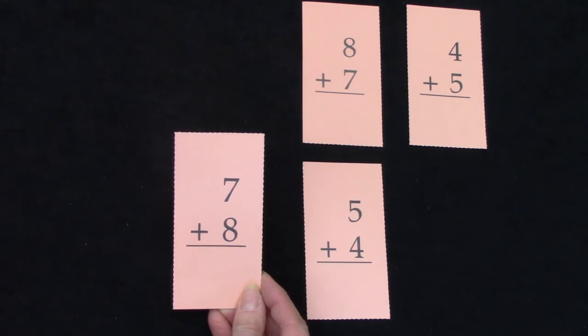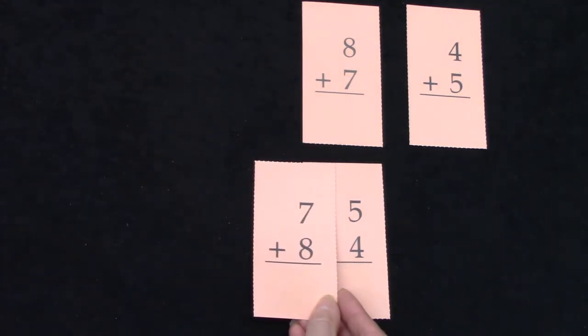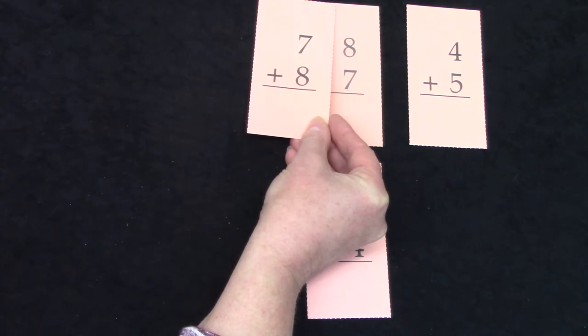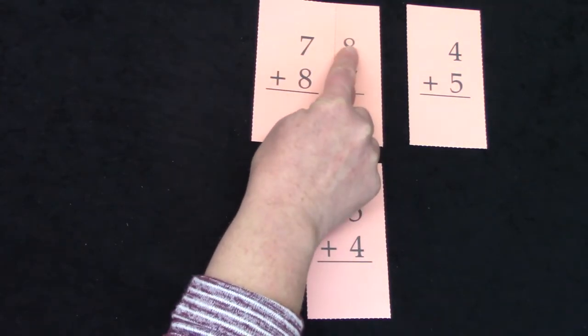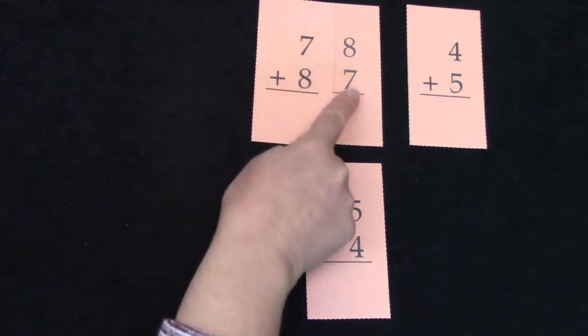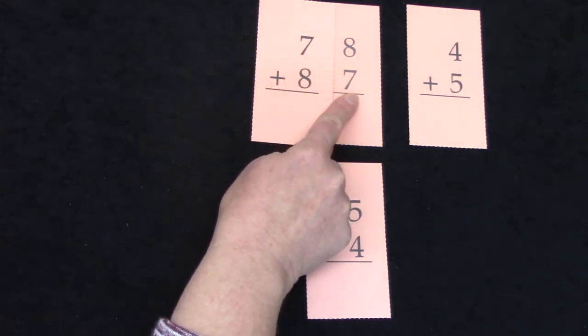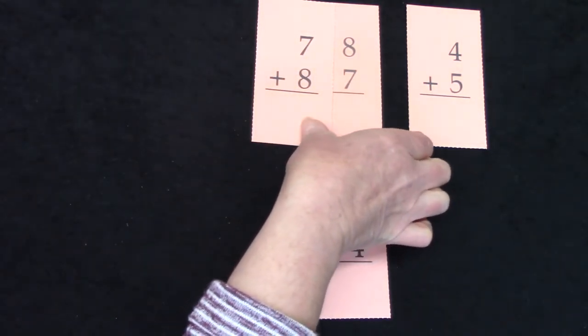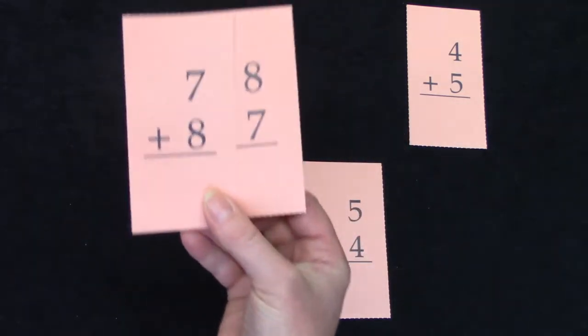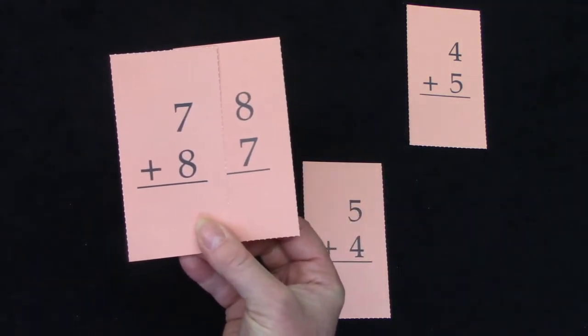Here we have 7 plus 8. Is it similar to 5 plus 4? No, not really. What about 8 plus 7? Do you see it? There's an 8 in this fact and a 7 in both of them as well. These are switcheroos. Let's take a closer look at these facts.